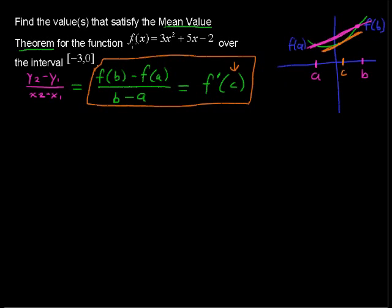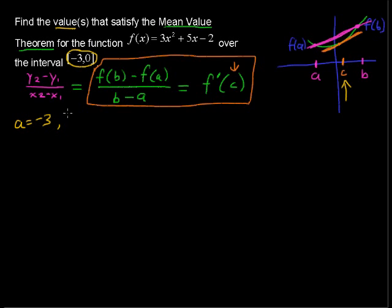We draw a secant line between these two points, and all the mean value theorem says is that there is some point along this graph such that the tangent line has the same exact slope as that secant line. We're going to use this idea to find the value c. For this problem, a = -3 and b = 0.